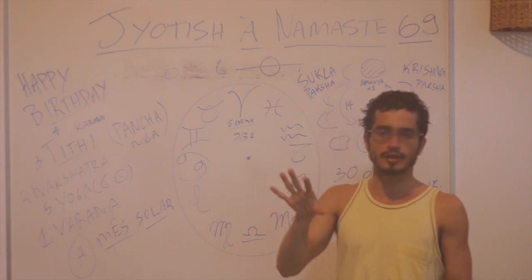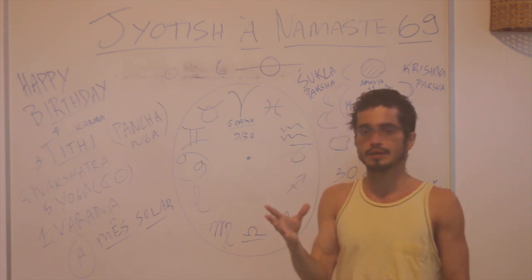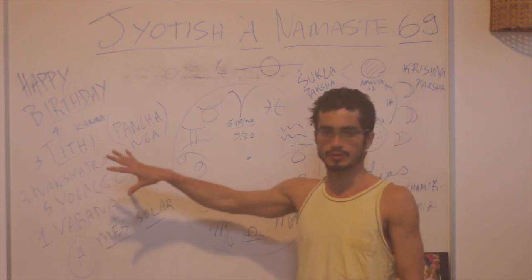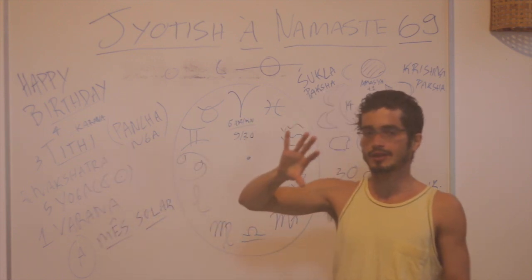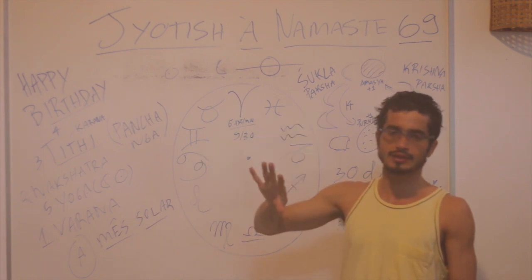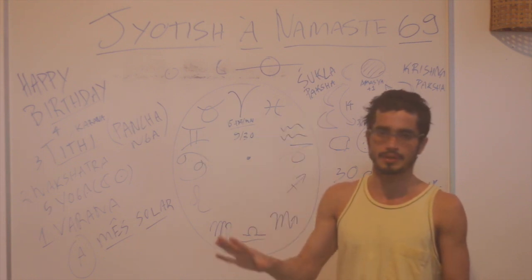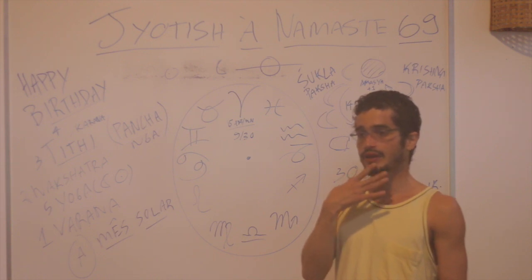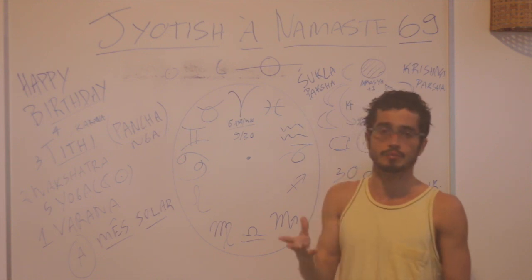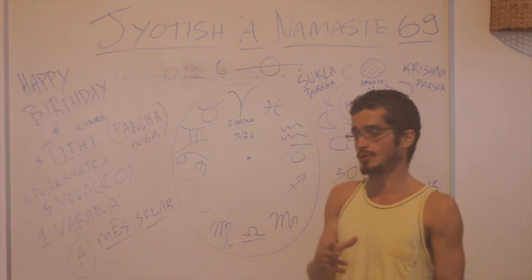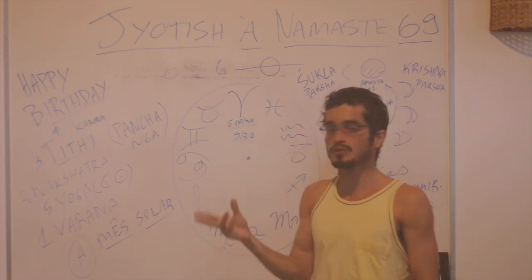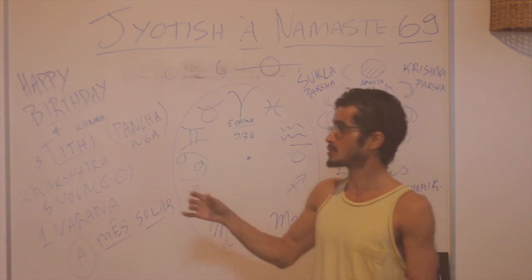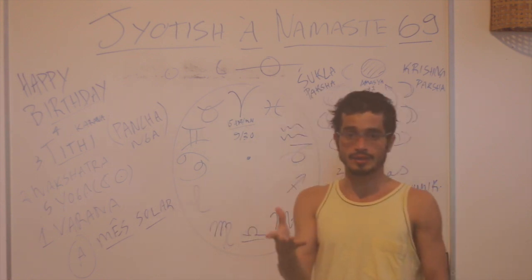In the software that you use, it should say which of these five things apply to your birth time. But if not all are listed, the Titi and the Nakshatra must be there. Without this, there is a lot of information you are not going to be able to access — you won't be able to know your lunar sign, which in Jyotish is your main sign, and also your birthday date.